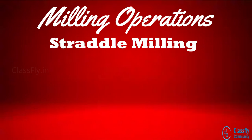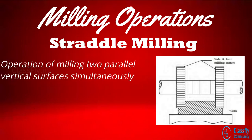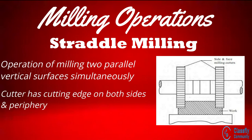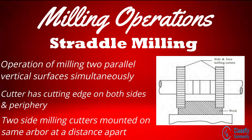Straddle milling is the operation in which a pair of side milling cutters is used for machining two parallel vertical surfaces simultaneously. The milling cutter will have the cutting edge on one or both sides as well as on the periphery. This is accomplished by mounting two side milling cutters on the same arbor set at a distance apart.